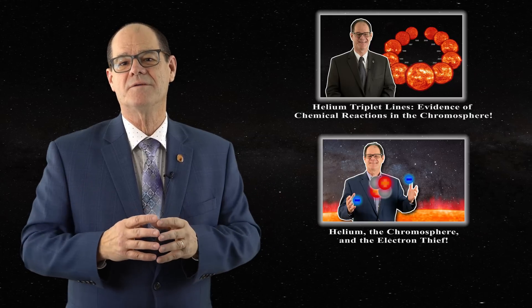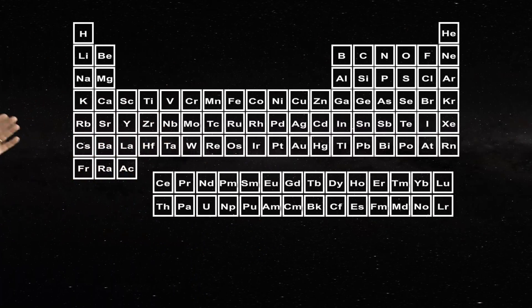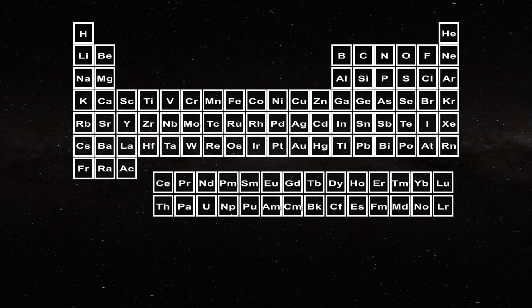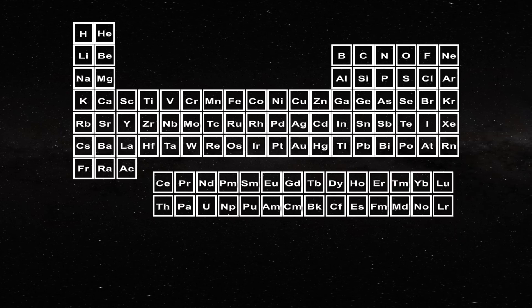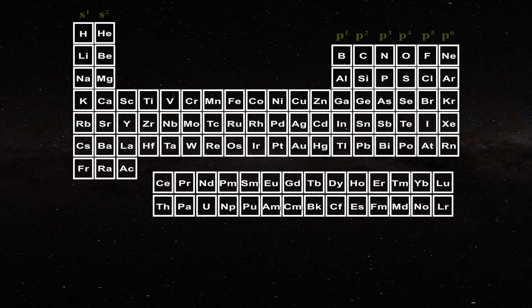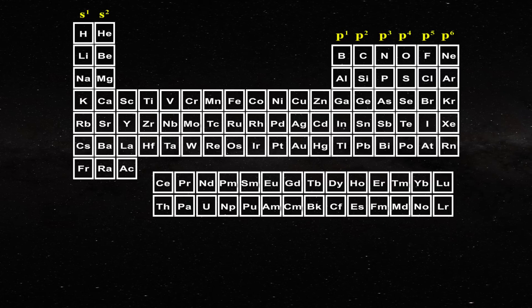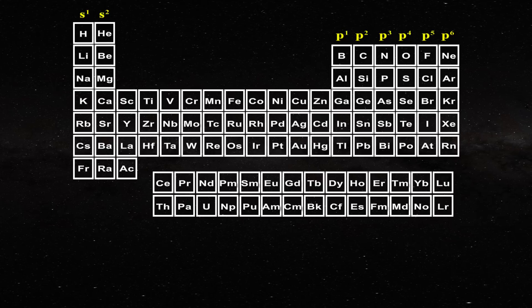If you examine the periodic table, helium is usually positioned with the noble gases. But unlike the noble gases, the last closed outer shell for helium is actually an s-shell, just like the group 2a elements, since the electronic configuration of helium is 1s2. Conversely, for the noble gases, their outermost electronic orbital is a closed p6 shell. As a result, helium may well be placed with the group 2a elements.